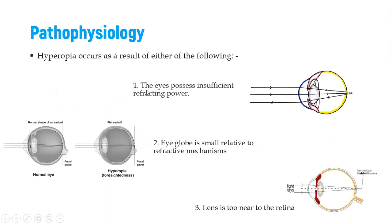Pathophysiology: we can have this occurrence occurring in any of these three ways. When the eye possesses insufficient refractive power, the light is actually converged but at the back of the retina.